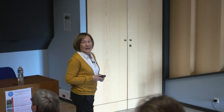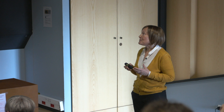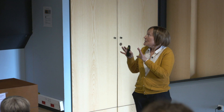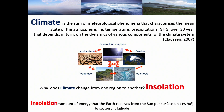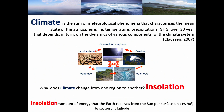First I'm going to define what is climate. Climate is not the weather. Climate is the sum of meteorological phenomena that characterizes the mean state of the atmosphere — temperature, precipitation, greenhouse gas concentration — and that over 30 years, which is an arbitrary time. It could be 25 or 40, but they decided 30 years. This mean state of the atmosphere depends in turn on the dynamics of the various components of the climate system.